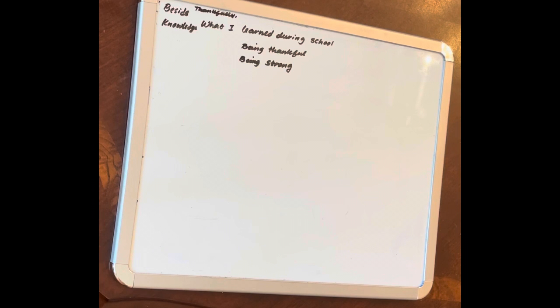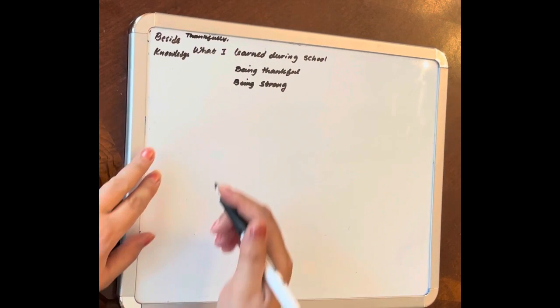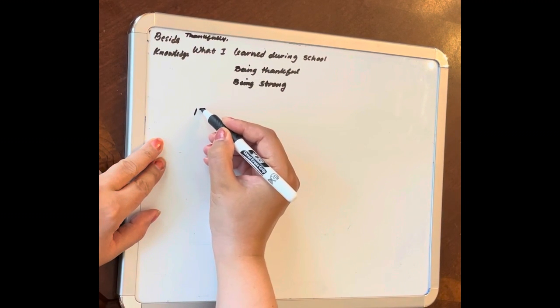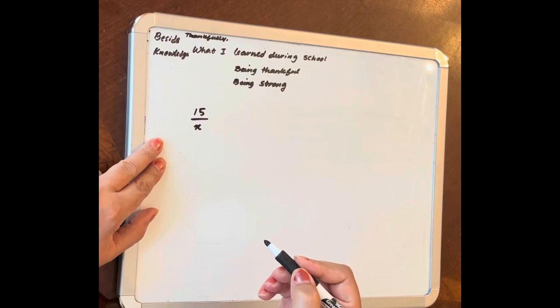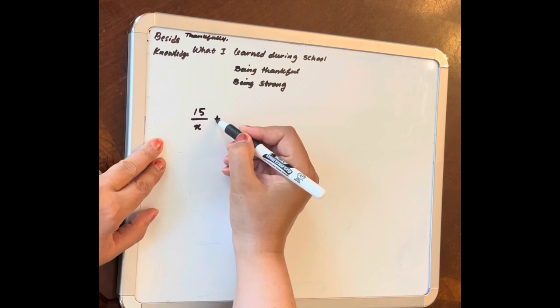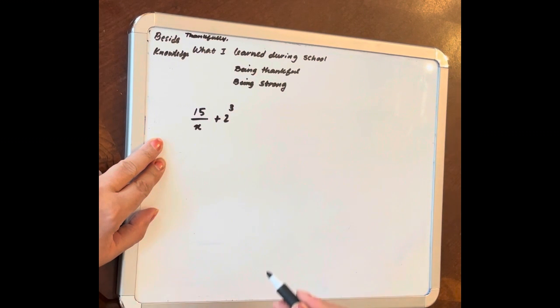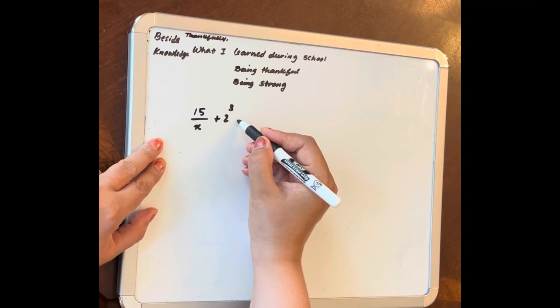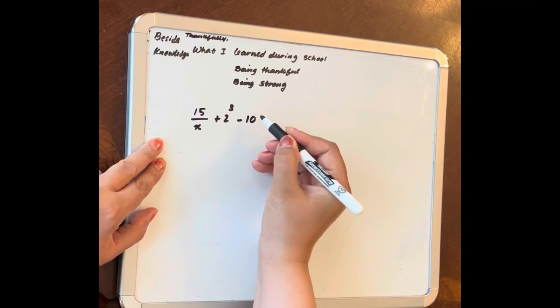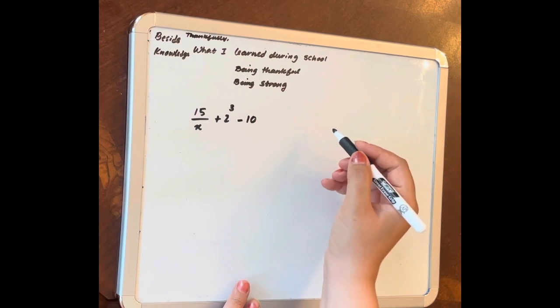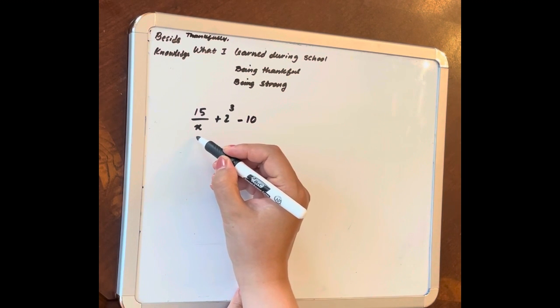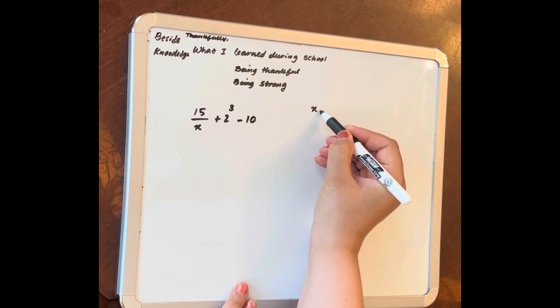So for example, we have variable expression 15 over x plus 2 to the 3rd minus 10. We want to substitute variable x with 5.